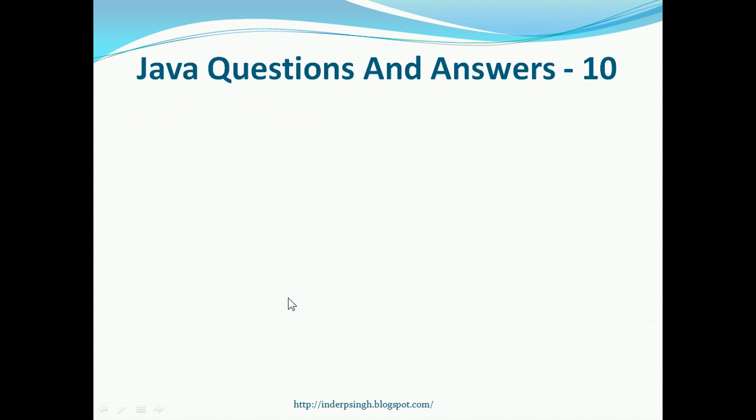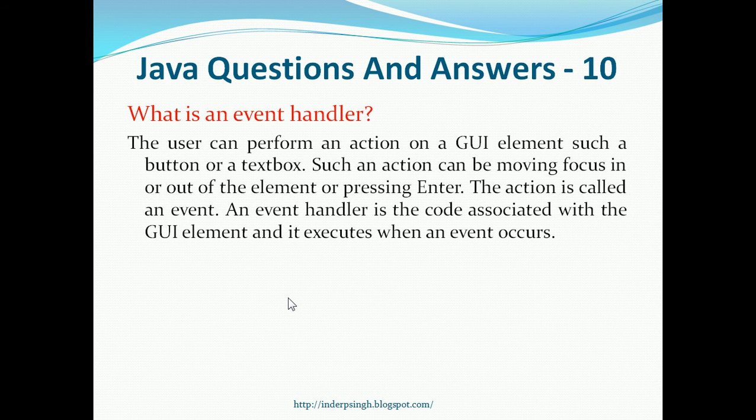Question 10. What is an event handler? The user can perform an action on a GUI element such as a button or a text box. Such an action can be moving focus in or out of the element or pressing Enter. The action is called an event. An event handler is code associated with the GUI element and it executes when an event occurs.